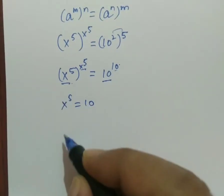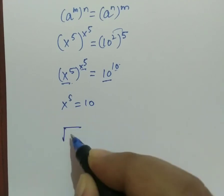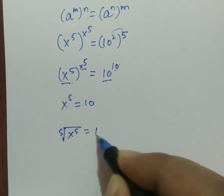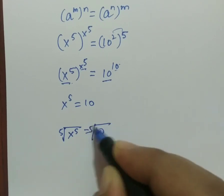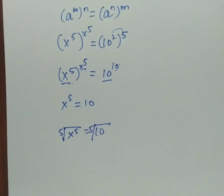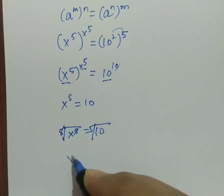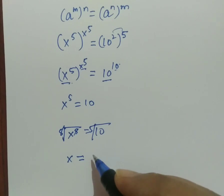Now put the root on both sides. x raised to the power 5 and 10, fifth root. So this and this can cancel. Therefore, the value of x is the fifth root of 10.